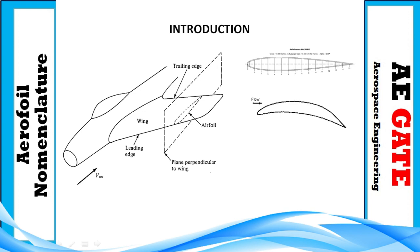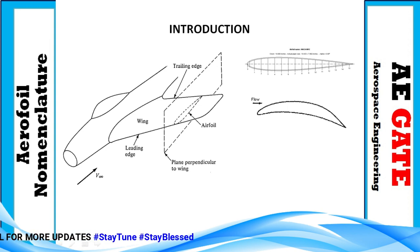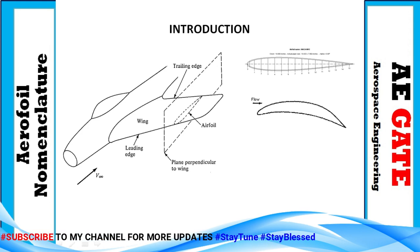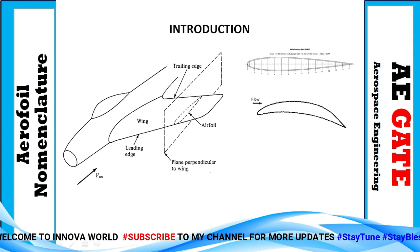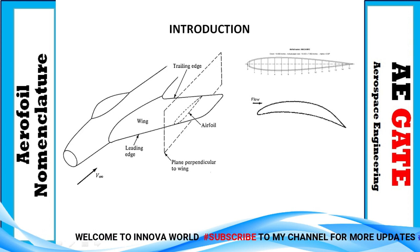An airfoil is the cross-section shape of a wing. When it is moved through a fluid or air, it produces aerodynamic forces. It has been designed in such a way that it creates a curved streamline, which helps to create a low pressure on the top and high pressure on the bottom.